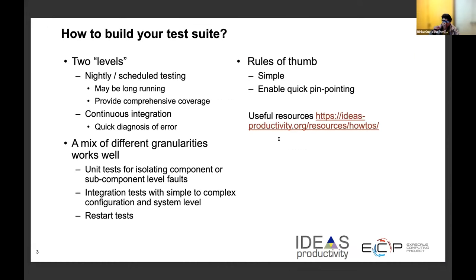The first question is how do you build your test suite and what forms a good collection of tests that will exercise your software in the way you want it to be exercised? There are two levels of tests we recognize. One is continuous integration, which has gained popularity in the last few years. It basically ensures that tests run as soon as you commit a piece of code to your repo, or when a pull request is accepted, the continuous integration test will run and verify that nothing has failed. These CI tests are designed for quick diagnosis of errors.